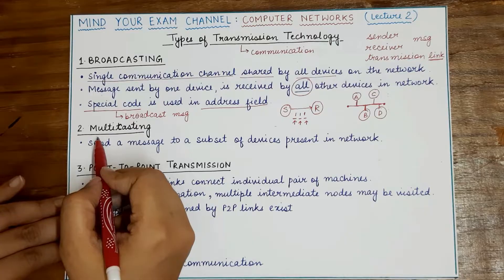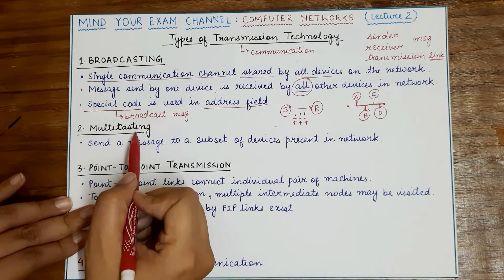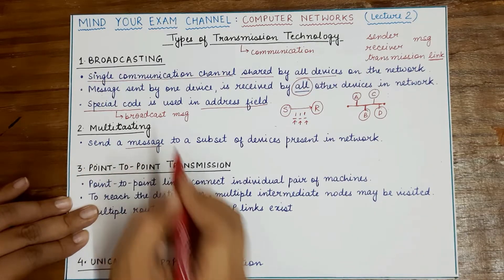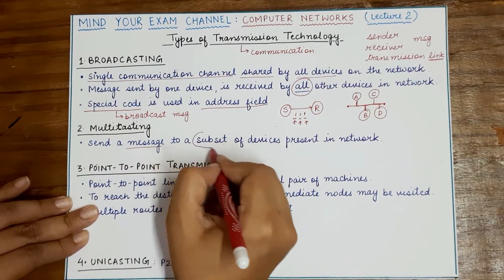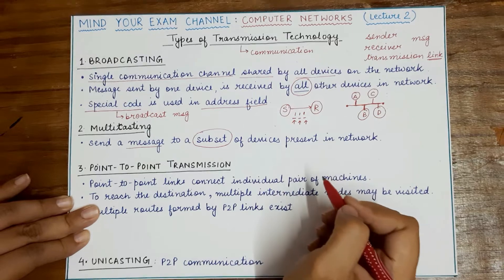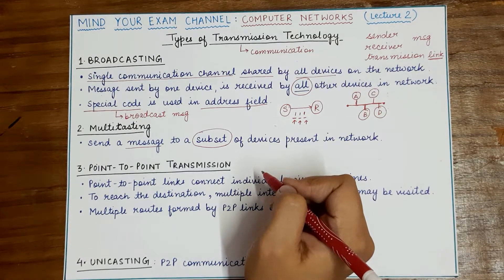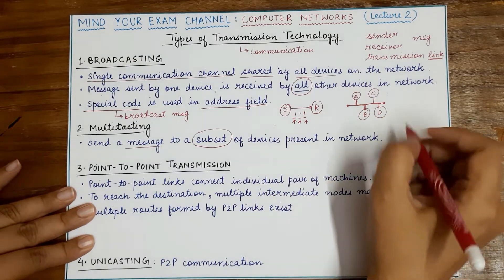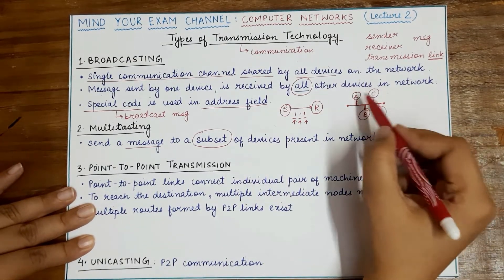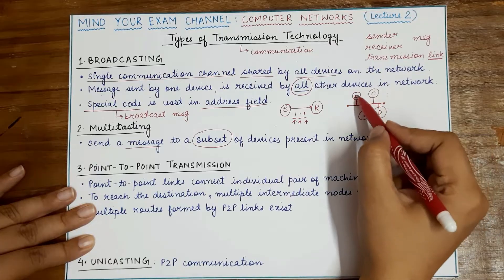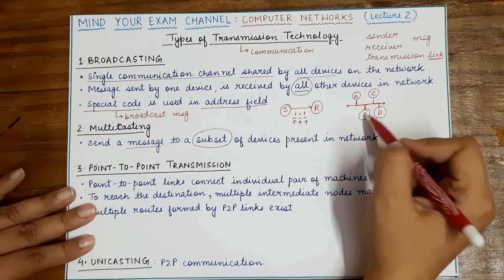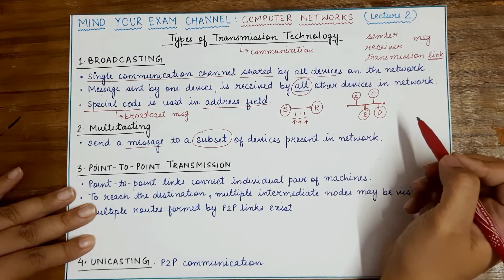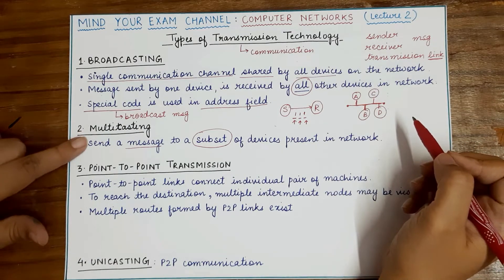A subcategory of broadcasting is multicasting, where the sender sends a message to some of the devices present in the network — a subset of the network. So a subset of the devices connected to the network receive the message. If the network consists of four devices, the sender sends the message to two devices rather than all the remaining three.